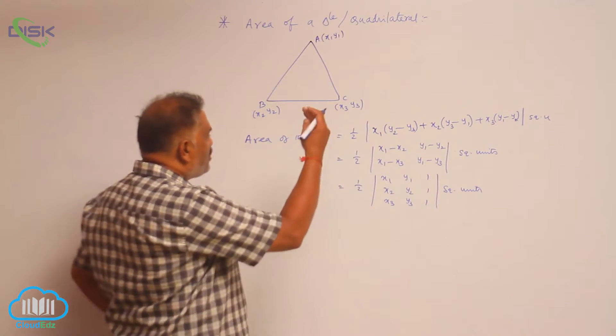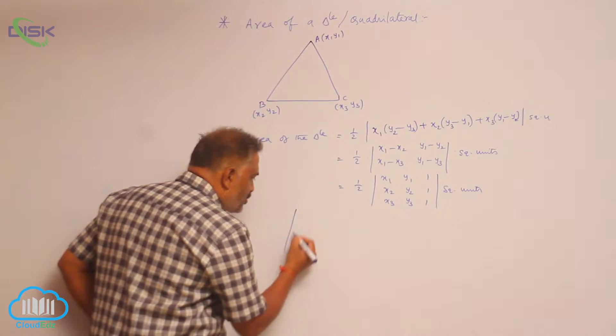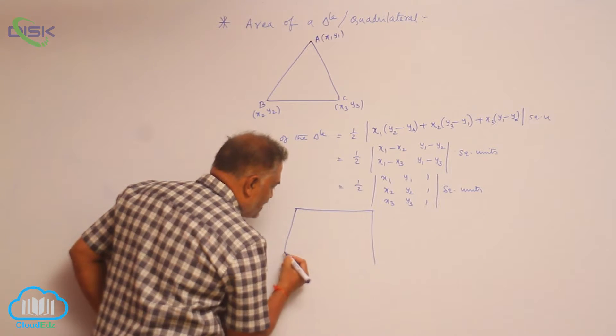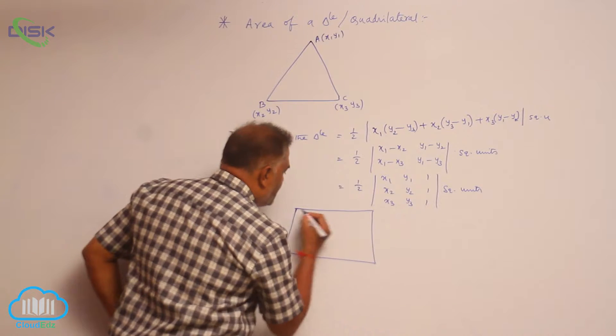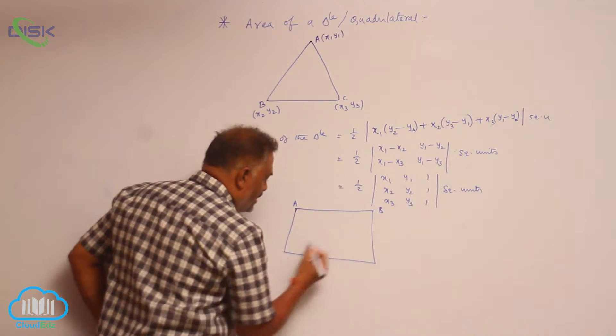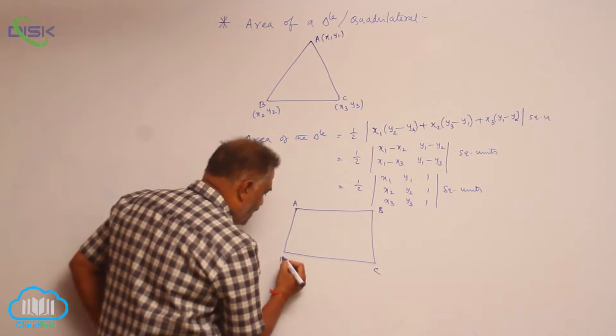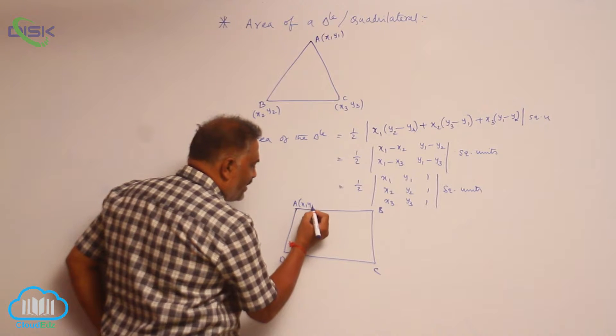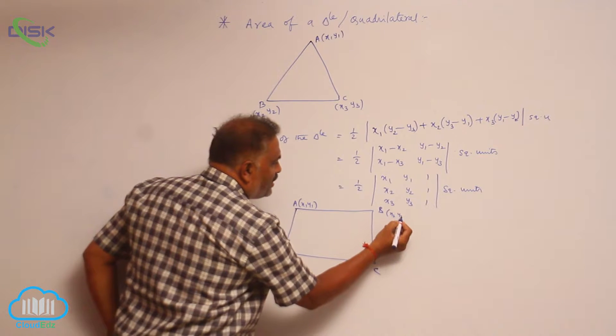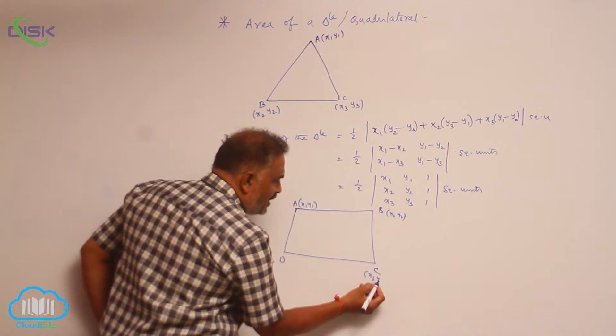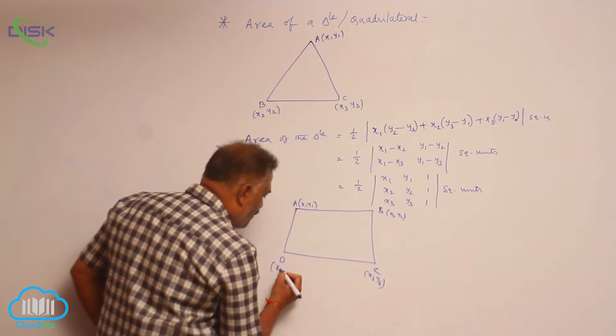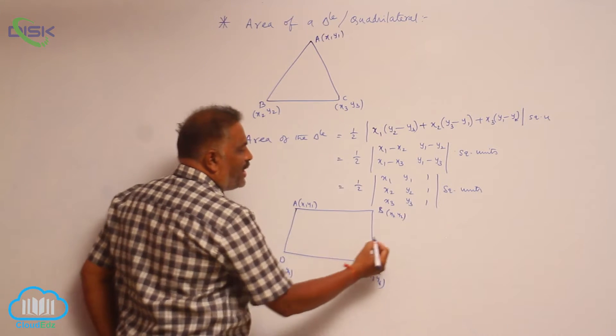Now coming to the quadrilateral. Suppose you take a quadrilateral - this is A, B, C, D. Now A(x1, y1), B(x2, y2), C(x3, y3), and D(x4, y4). Now how to find out area?